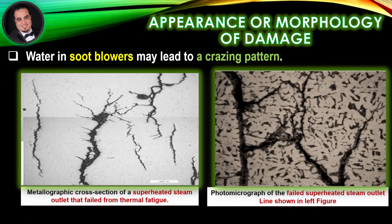Water in soot blowers may lead to a crazing pattern. The predominant cracks will be circumferential and the minor cracks will be axial. As illustrated in figures, a metallographic cross section of a superheated steam outlet line that failed from thermal fatigue, and a photomicrograph of the same failed superheated steam outlet line.